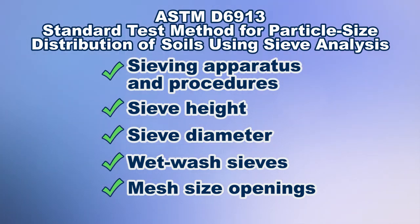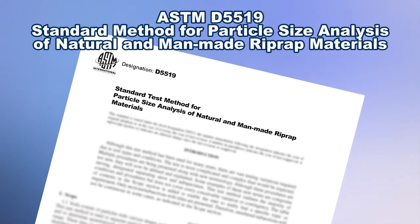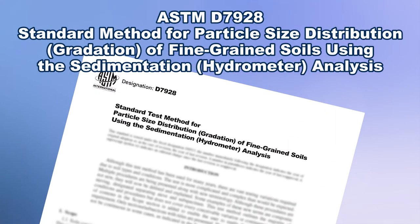For soils with particle sizes greater than 75 millimeters, ASTM method D5519 should be used. And for soils finer than 75 microns, use ASTM method D7928.